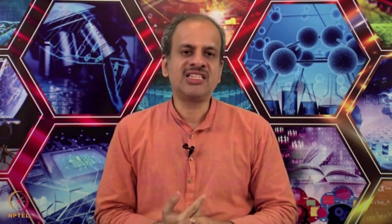This concept of conservatism is very important and it is at the root of several accounting treatments. Two important examples are on the screen. The first one is that closing stock is valued at cost or market value, whichever is lower. So in the balance sheet, while showing the inventory, a particular item of stock will have a cost. If its market value is more than the cost — say the cost is 10,000 and the market value is 12,000 — we will not record the unrealized profit of 2,000 because we have not yet sold the item. We will continue to show it at 10,000.